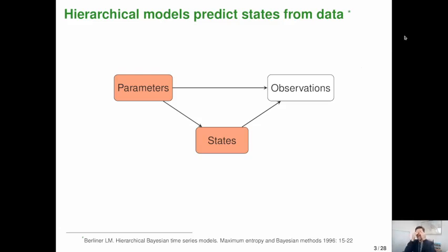But first, let's think a little bit about what a hierarchical model is. These are models that are widely used in ecology. And the basic idea is that we have some observations, but we really are interested in estimating states and parameters. The observations themselves aren't necessarily telling us what we really want to know. And so hierarchical models sort of decompose what we know into these parameters, states, and the observations depend on both.